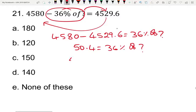50.4 equals 36%, which means 36 by 100. Percentage means multiplication of the number.